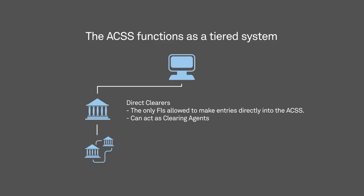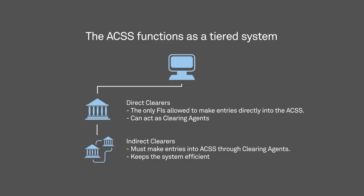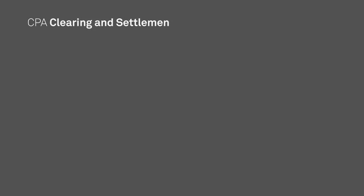The direct clearer that is owed funds as a result of a payment exchange makes the entry into the system. Direct clearers make these entries on their own behalf and can also act as clearing agents, making entries into the ACSS on behalf of other financial institutions that are not direct clearers. The FIs that use the services of a clearing agent are referred to as indirect clearers. This tiered system keeps the number of ACSS entries to a minimum and enhances the efficiency of the ACSS.